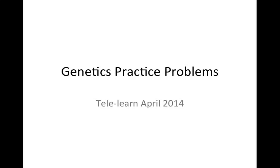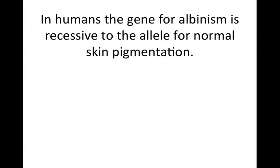So to get started, here's your first scenario. You've got an albinism question. Your first question is: if two heterozygous people have children, what is the chance that the child will have normal skin pigment? Question number two: what is the chance that the child will be albino? And question number three: if the child has normal skin pigment, what is the chance that it's a carrier for albinism?